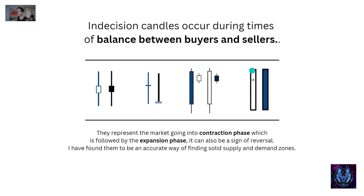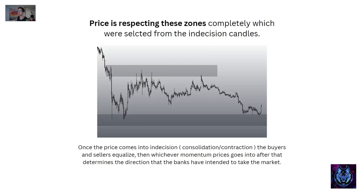Examples of these dojis: basically a long wick with a small body, or just a body with no wicks. Price respects these zones completely — I went into the one-hour time frame, marked out the indecision candles, and price absolutely loves to respect them. Once price comes to the indecision candle, which is a contraction zone, buyers and sellers equalize. Whichever direction price moves after that determines the direction the banks intended. If we see displacement to the downside off the indecision candle, institutions want to move price downward.